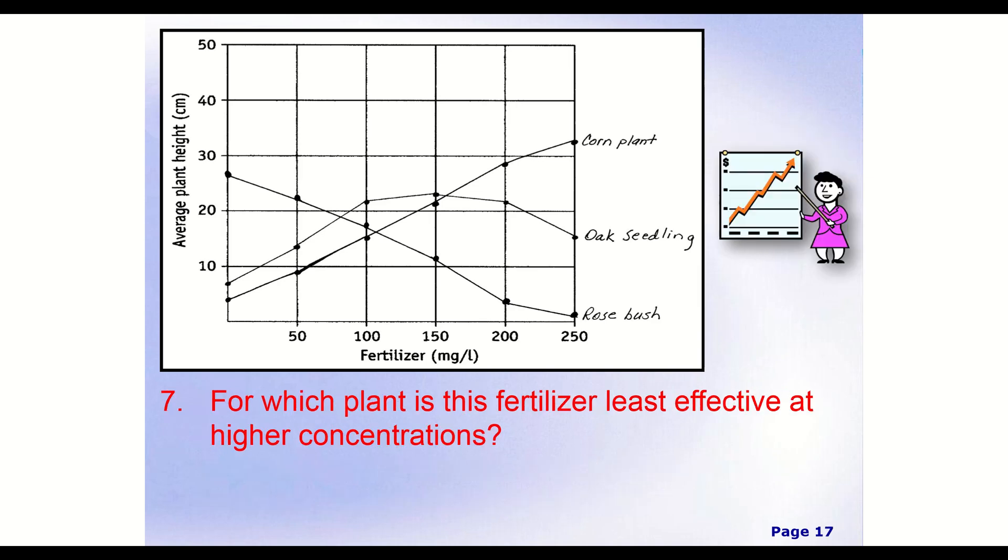Question number seven. So now we're looking at, for which plant is this fertilizer least effective at higher concentration? So whatever fertilizer we're using, for which plant is least effective? And so if we're looking at plant height, really, what this is asking us, which one did it hurt the most? Which one did it result in the lowest amount of growth? And if we're looking at this, well, now, of course, at low concentrations, it varies. We're looking at just high concentrations. So that means we're going to want to be looking at probably about our 200 and maybe consider our, or sorry, consider our 200 and 250.